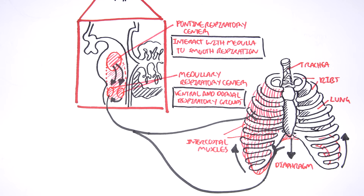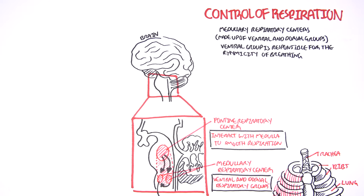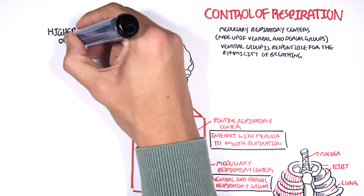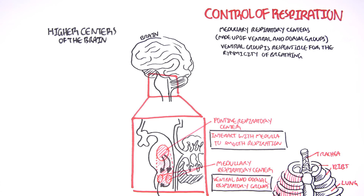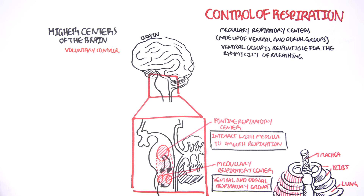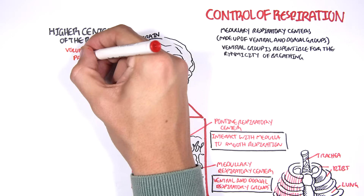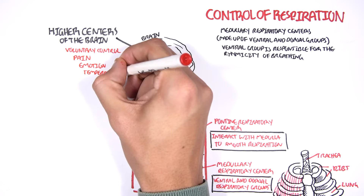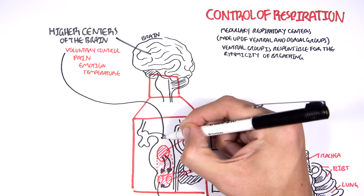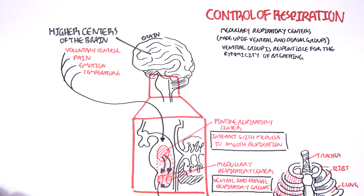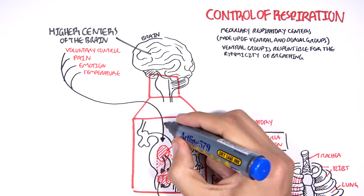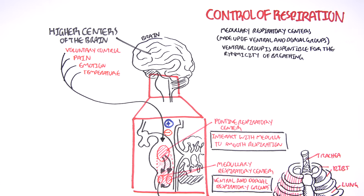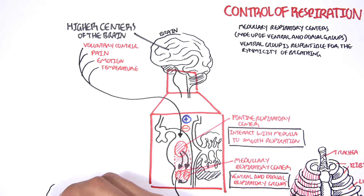Now let us see what can influence the respiratory center — what can increase respiration and what can suppress it. Firstly, we have the higher centers of the brain, where we have voluntary control. We can stop breathing for a while before the brain takes over. The higher centers are also important for the perception of pain, emotion, and temperature, and these factors can influence the respiratory rate. They will stimulate or suppress the pontine respiratory center, which then will stimulate or suppress the medullary respiratory center and respiration itself.